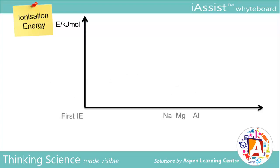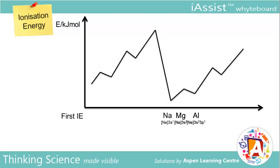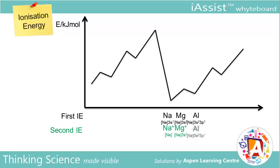Previously, we looked at the graph of the first ionization energies. But what about the second ionization energies? Since the X atom has already lost an electron, the electron is now removed from an X+ cation. Take note of the electronic configurations for each of these X+ ions — they are the same as the electronic configurations for the preceding elements. When an electron is removed from each of the elements, the X+ cations have the same electronic configuration as the element right before them.